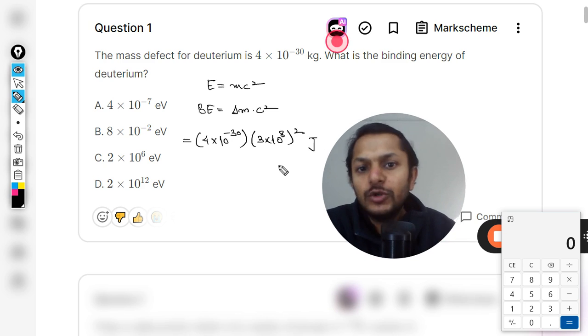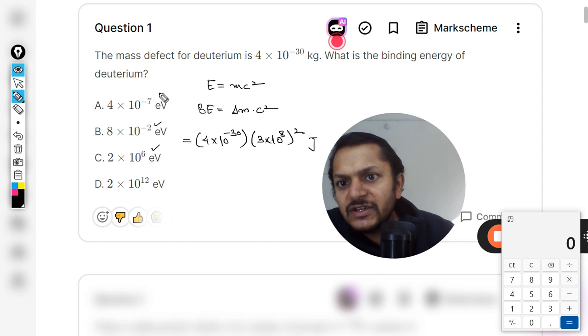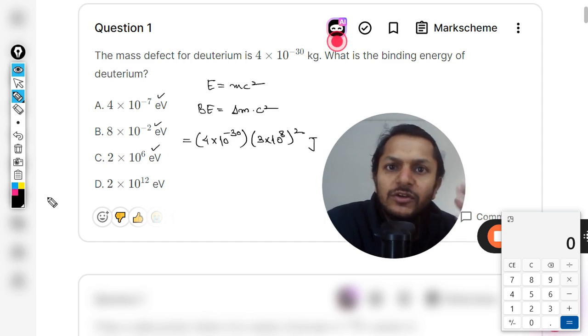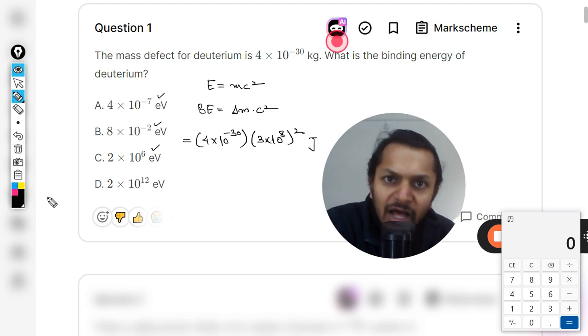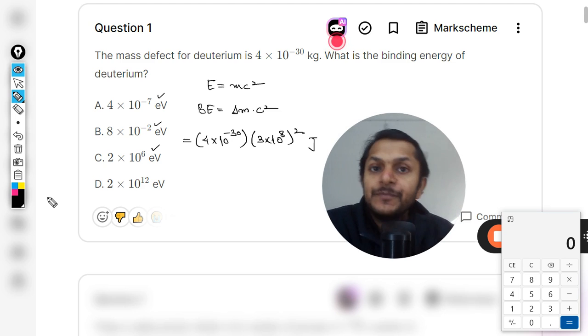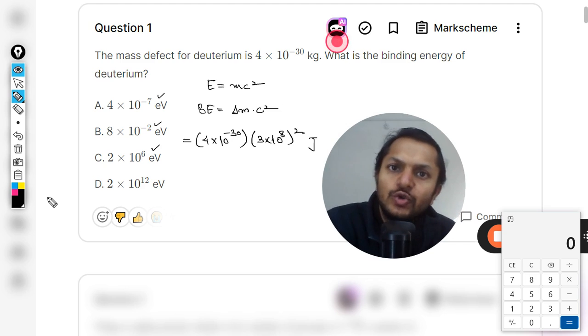But as you can clearly see that the answer is given in electron volts, so we have to convert this joule into electron volt. And how that can be done? We divide the value in joule by the elementary charge on the electron, that is 1.6 × 10^-19.